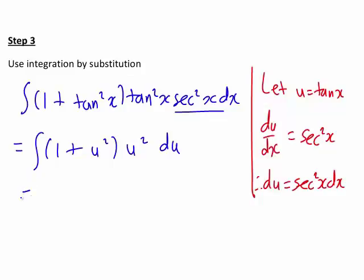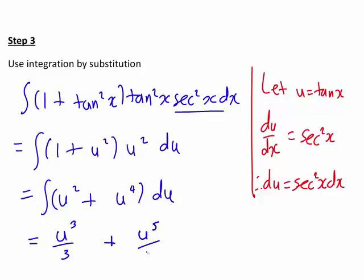It's now just a matter of expanding out the brackets. That gives us u squared plus u to the 4 as the expression we're integrating. Integrating that, we get u cubed divided by 3 plus u to the power of 5 divided by 5 plus c.